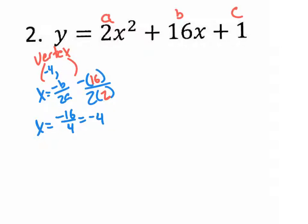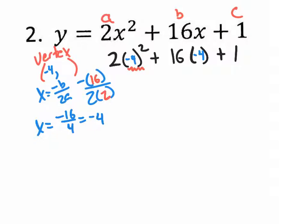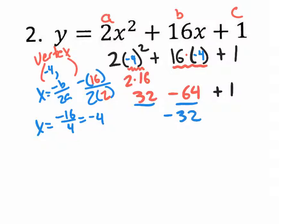Let's plug it in to find the y. So y equals 2 parentheses squared plus 16 parentheses plus 1, and we plug in the vertex x value of negative 4. Using PEMDAS, we start with exponents first: negative 4 squared is positive 16. 2 times 16 is 32. 16 times negative 4 is negative 64. Bring down the plus 1. Going left to right: 32 take away 64 is negative 32, and negative 32 plus 1 is negative 31. So the vertex is negative 4, negative 31.